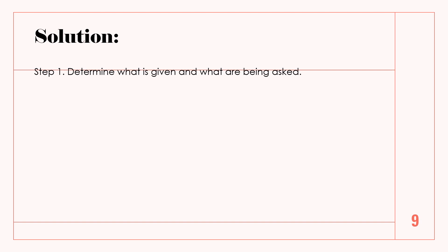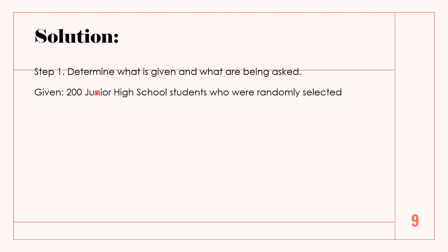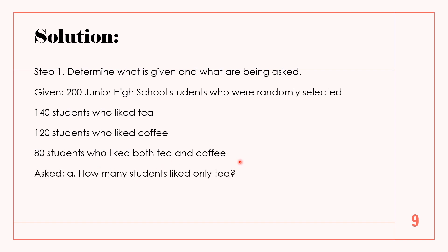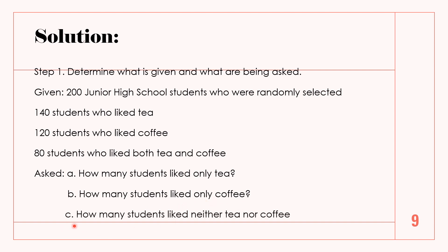For our solution, Step 1: Determine what is given and what is being asked. We have 200 junior high school students who were randomly selected. 140 students liked tea, 120 students liked coffee, and 80 students liked both tea and coffee. What is being asked: how many students liked only tea, how many liked only coffee, and how many liked neither tea nor coffee?